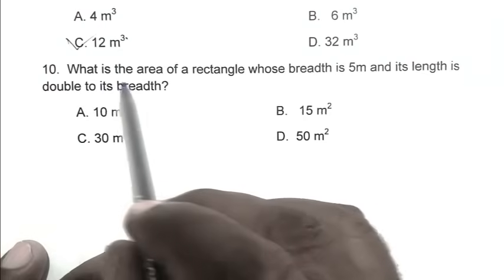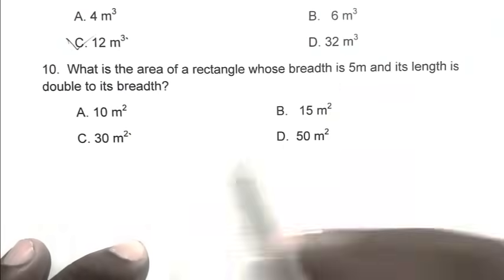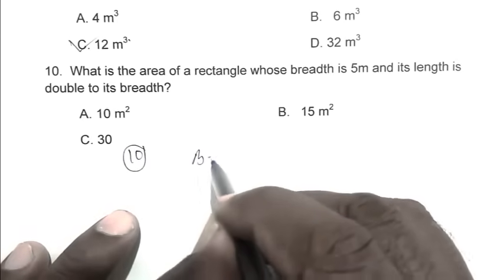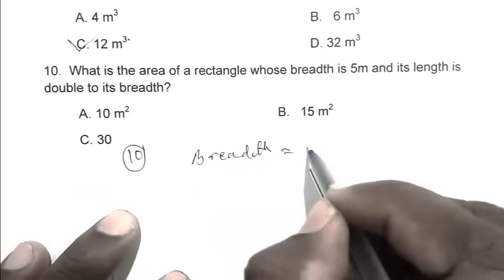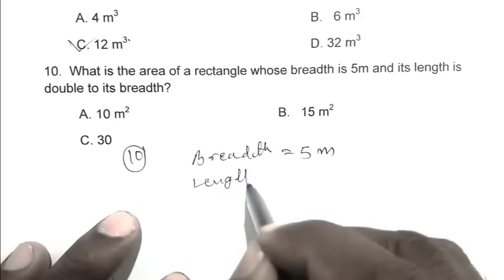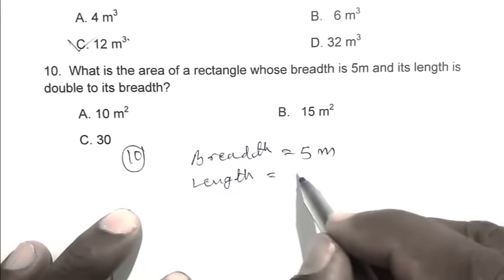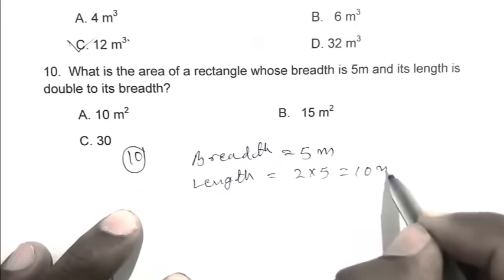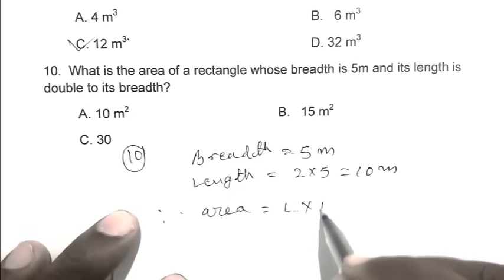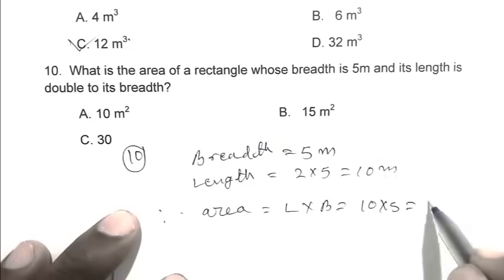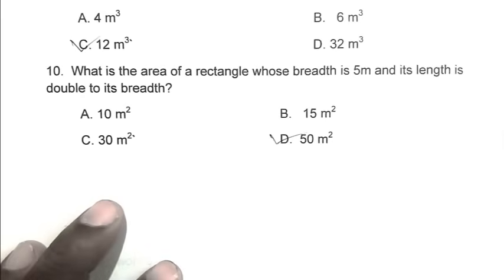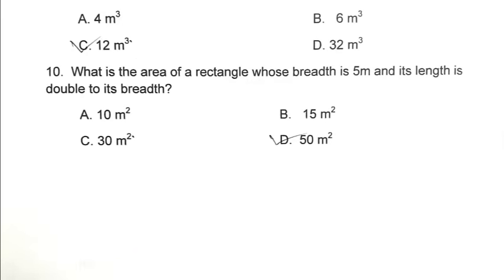Question number ten: what is the area of a rectangle whose breadth is 5 meter and its length is double of its breadth? Breadth is 5 meter, length is double that, 2 multiplied by 5 equals 10 meter. Therefore area equals length multiplied by breadth, 10 multiplied by 5 equals 50 meter square. So D is the right answer. Thank you for watching, have a good day.